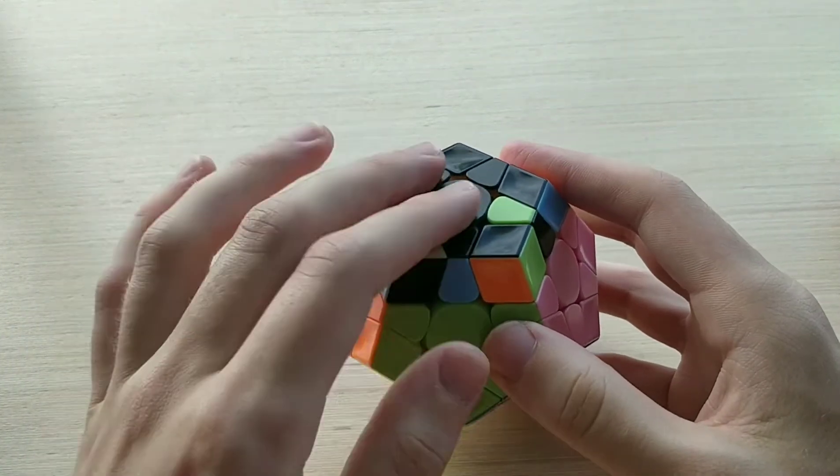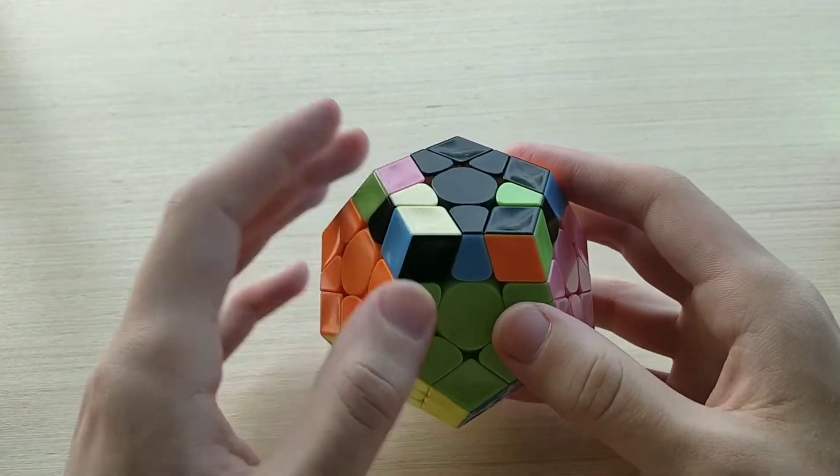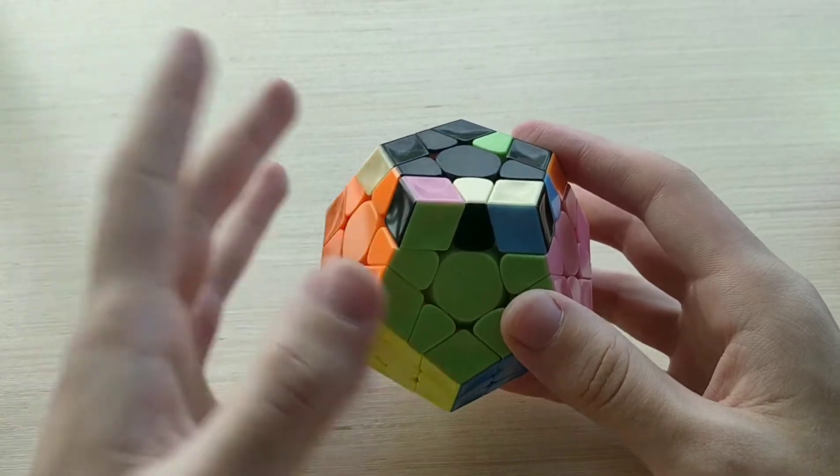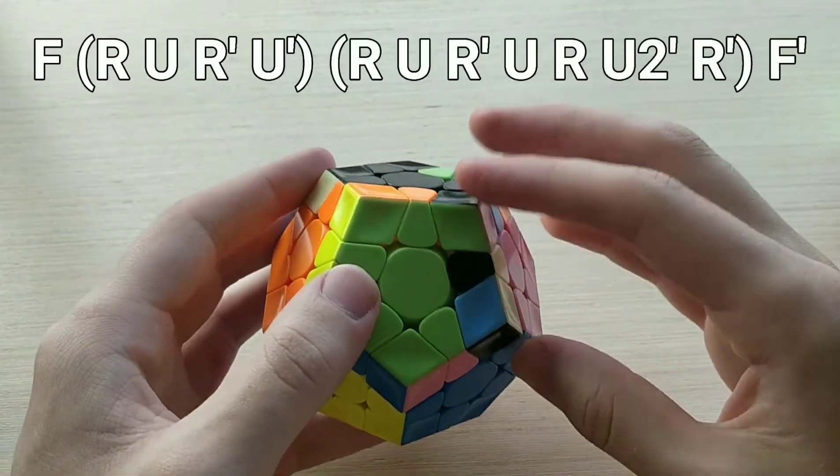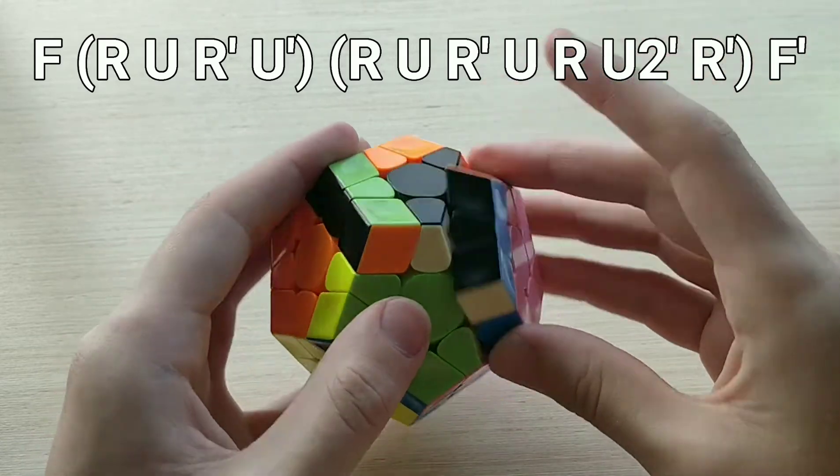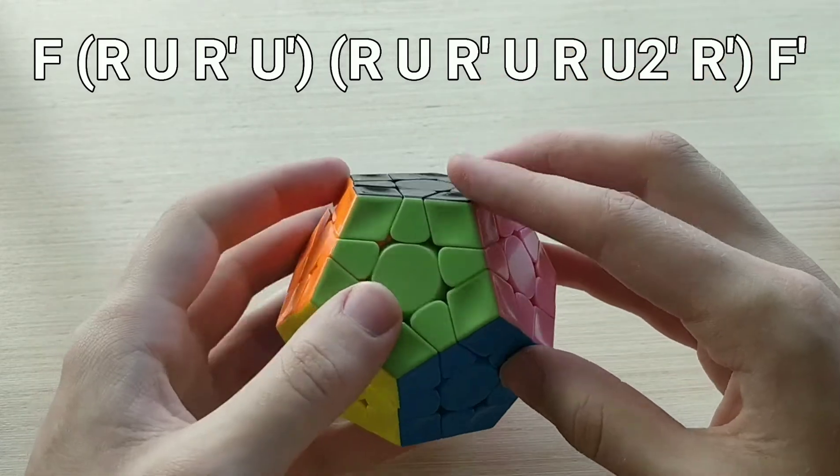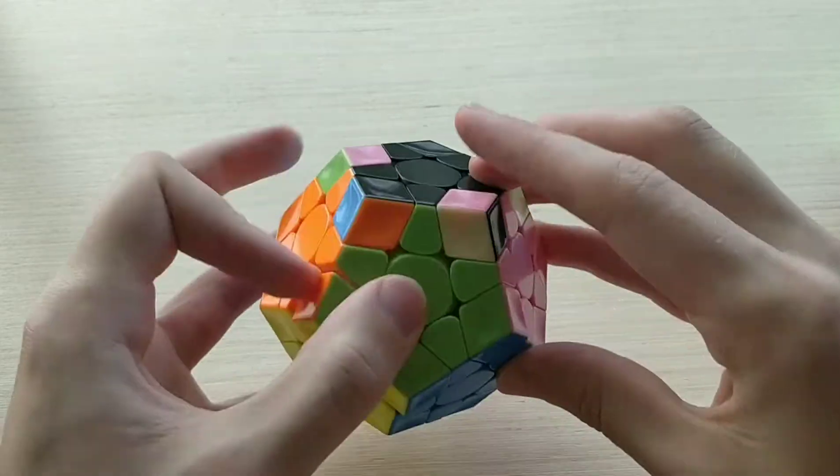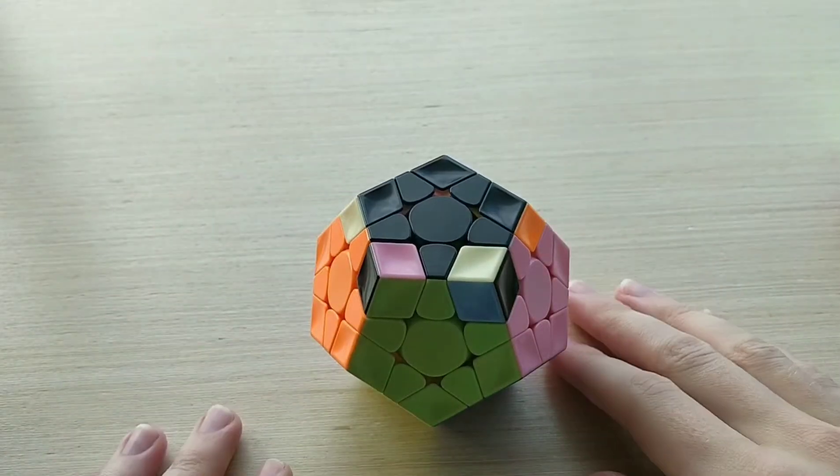And as for this last one, this is a new algorithm, and it's a little bit longer than some of the others, but it's super easy to finger trick and super easy to learn, because from this angle, we just do f, and then sexy, and then sledge, and then f prime. So f, sexy, sledge, f prime. Like that.